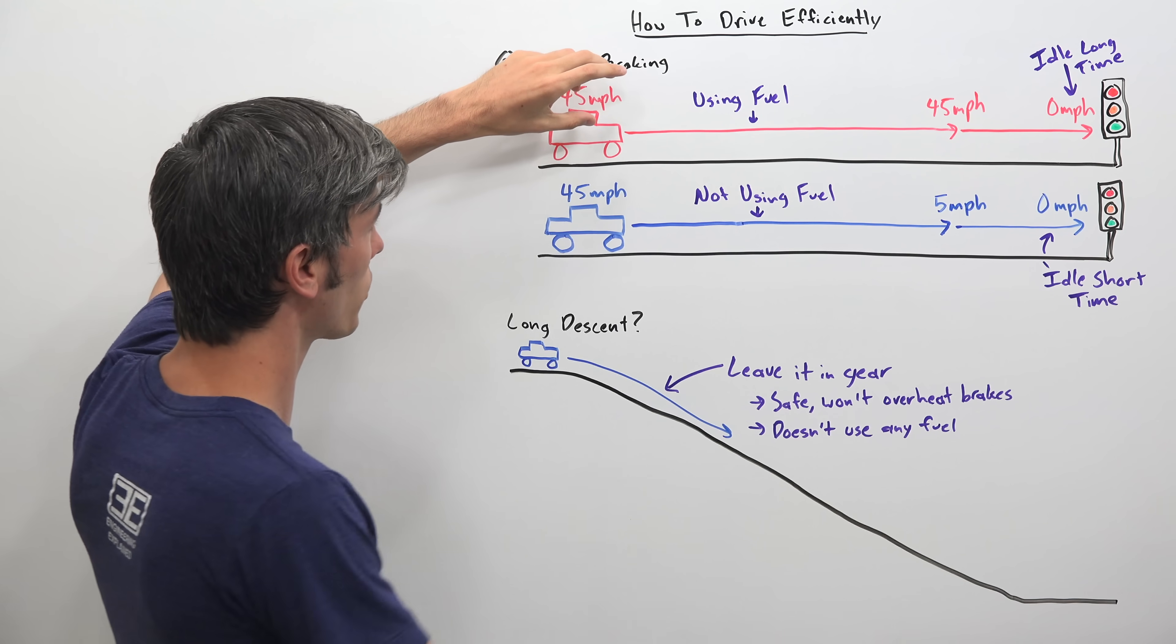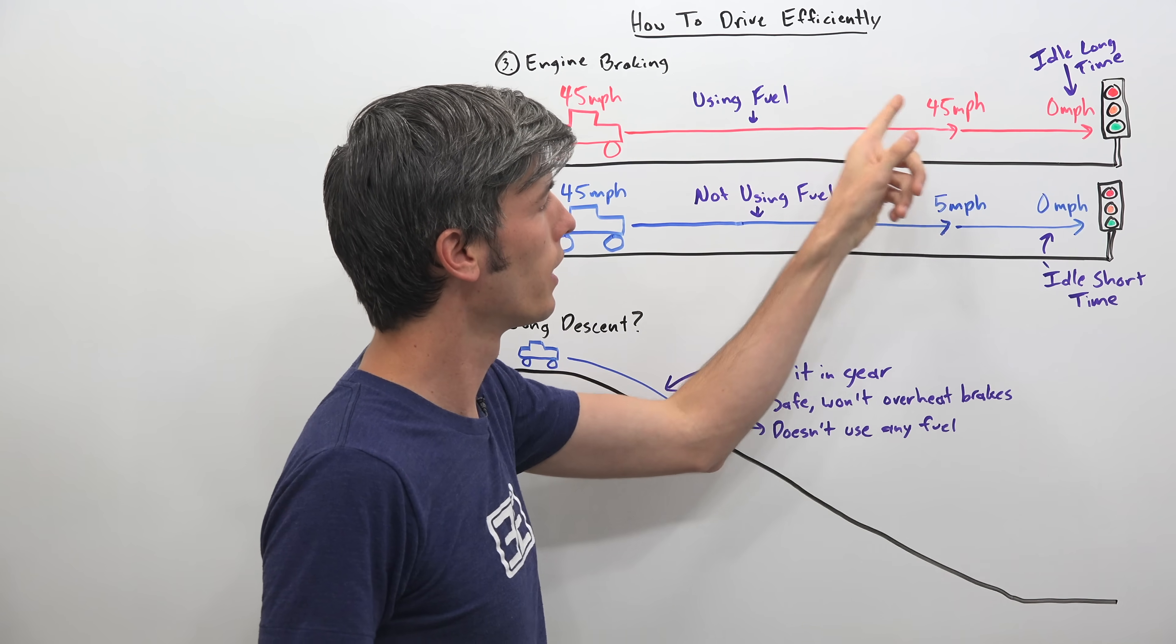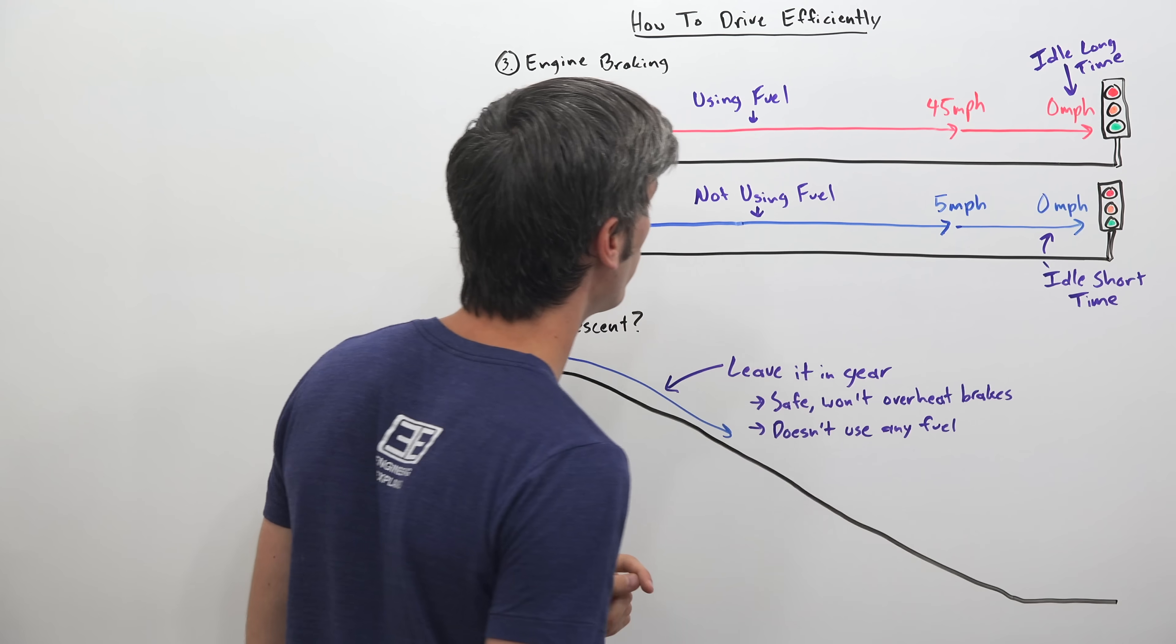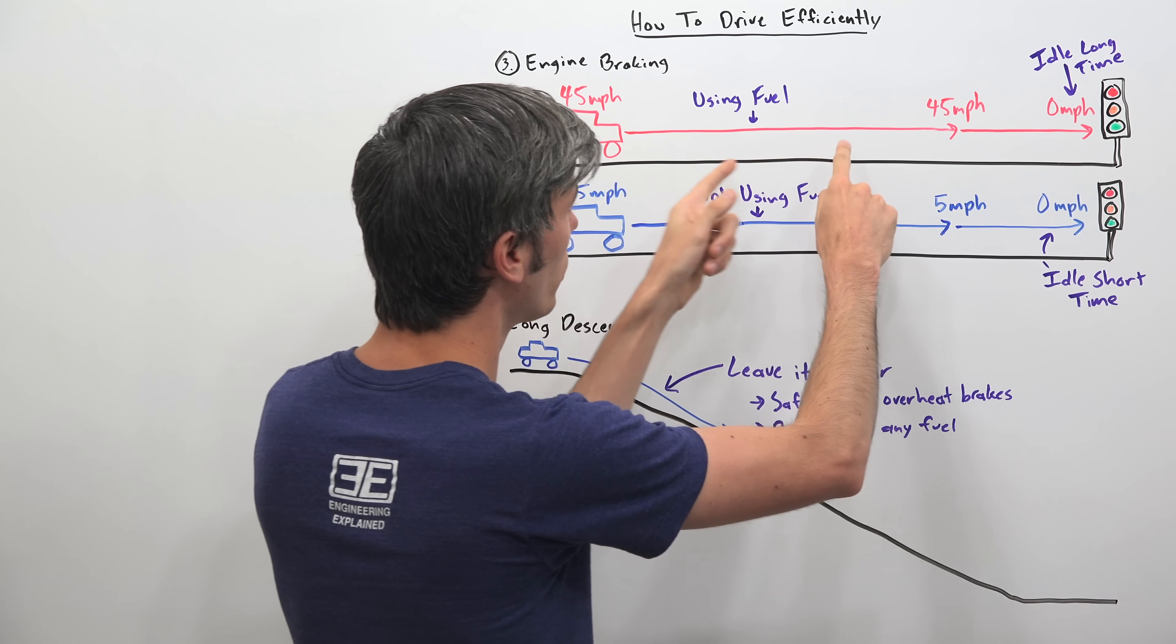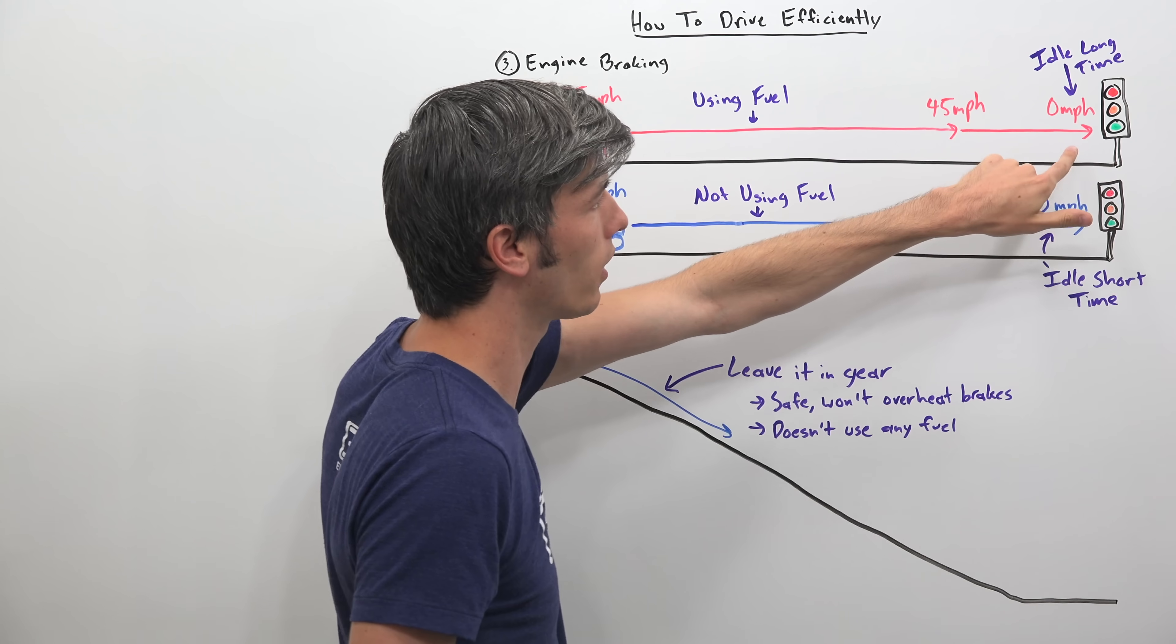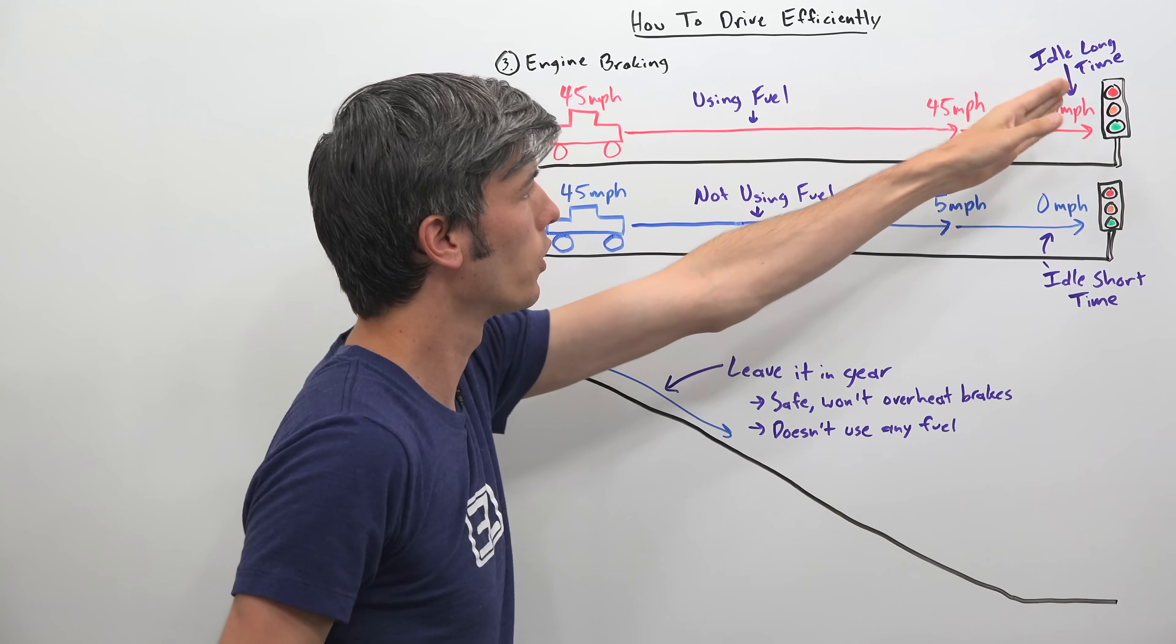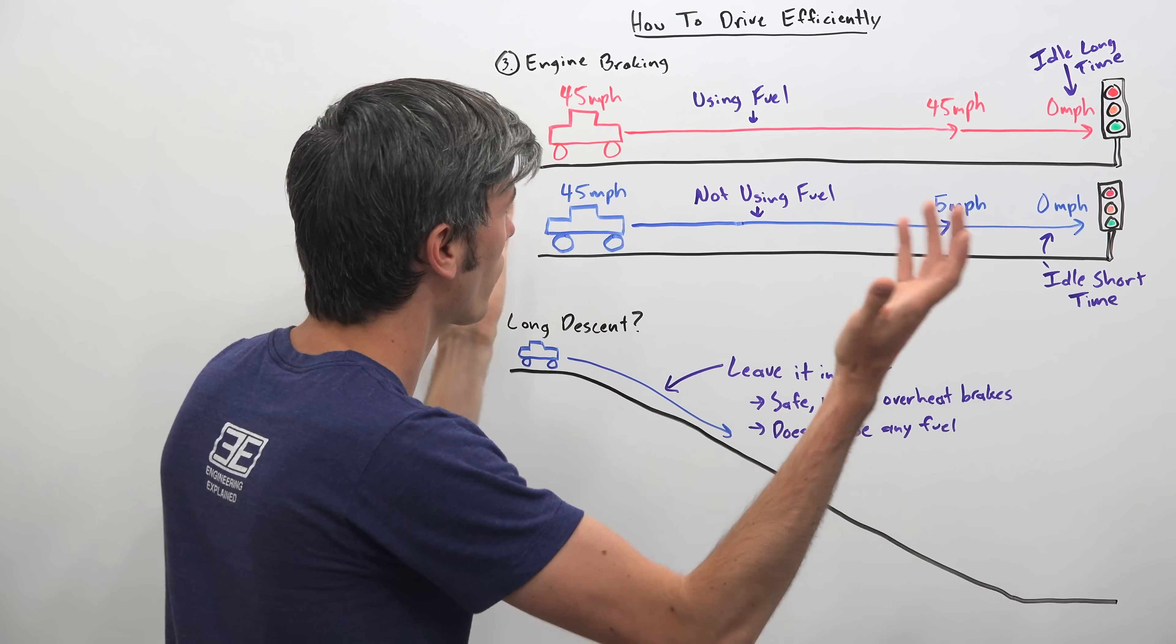So if you have this first scenario, you're driving along at 45 miles per hour. You're coming out to that stoplight. You maintain that 45 miles per hour until you get fairly close. And then you decelerate down from 45 down to zero. So that whole time that you're driving at 45 miles per hour, you're using fuel. Then for this short duration, you won't be as you're decelerating but engine braking. And then once you sit there idling and you're going to sit there for a long time because you got there very quickly. You're going to be continuing to use fuel as you sit there idling. Assuming the engine doesn't have start stop.